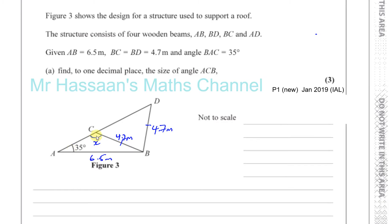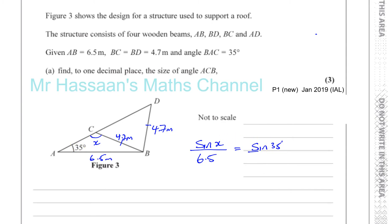This is a non-right-angle triangle and we have a pair of opposites that we know, and a pair where one is unknown — that's the angle we need to find. Using the sine rule: the ratio of the sine of an angle over the length opposite it is the same for any of the three sides and angles in any triangle. So sine X over 6.5 equals sine 35 divided by 4.7. Therefore sine X equals 6.5 times sine 35 over 4.7.